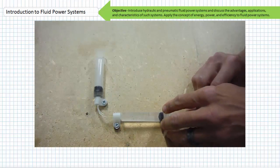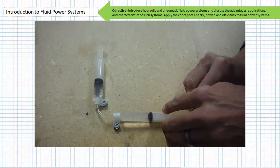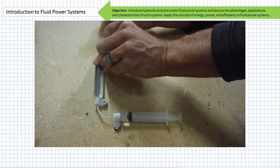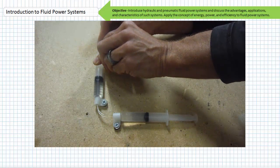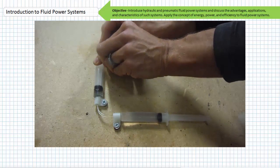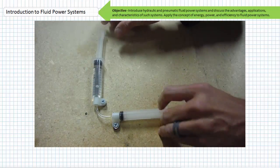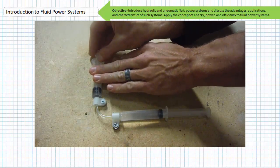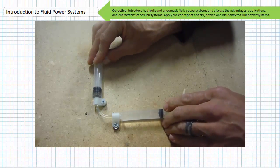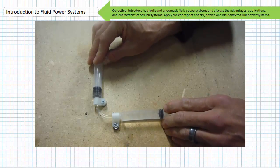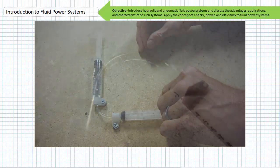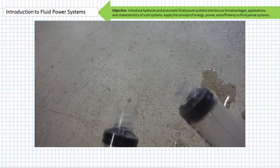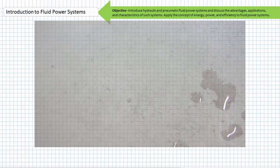In contrast to our previously examined simple pneumatic system, note the consistency, predictability, and regularity with which the hydraulically driven actuators extend — there's no lag in actuation. Additionally, note the firmness of a hydraulic actuator supporting a load. These observed characteristics are due to the incompressible nature of liquid and present a major advantage over pneumatic systems. In the interest of fairness, when a pneumatic system springs a leak, it's far easier to clean up than a leak in a hydraulic system.